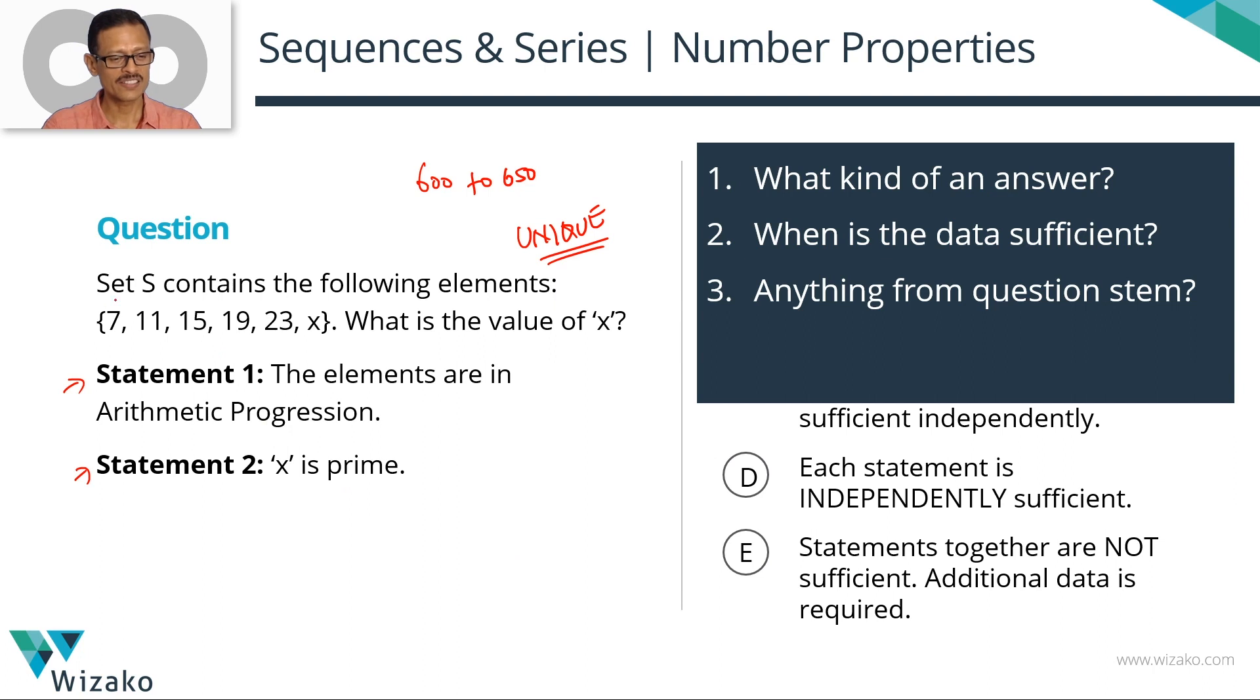Question stem states that this is a set. Yes, that's what it says. Recall the definition of a set. A set is a collection of well-defined unique elements. Probably this unique elements is the definition of the set which is going to be very useful for us, which means that x has to be a number which is different from what we have seen here. It cannot be 7, 11, 15, 19, or 23. It's something other than these five numbers. So that is information that we're deriving from the question stem.